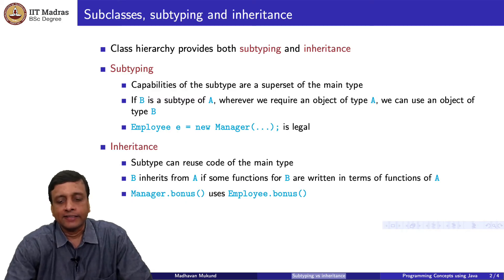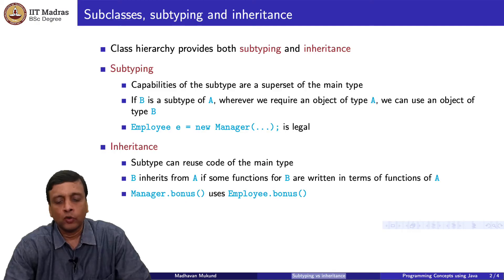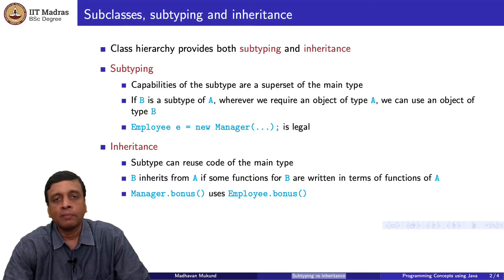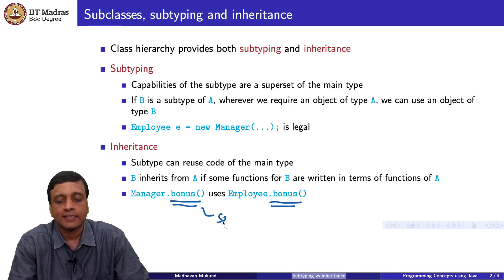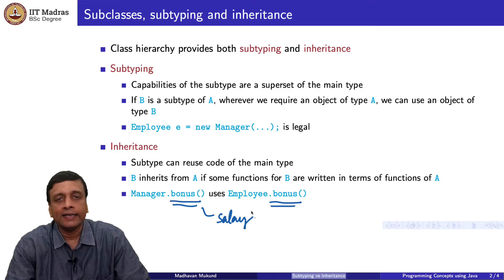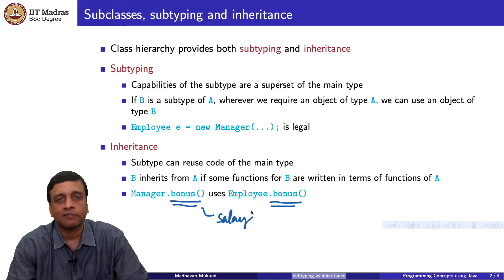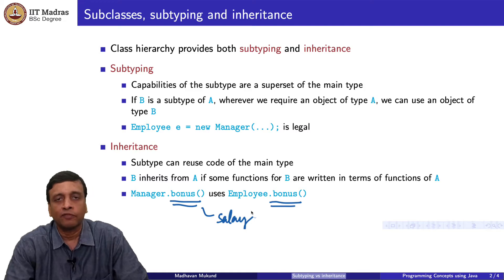The other part is inheritance. Inheritance essentially is talking about the subtype reusing code. B inherits from A if some functions of B are based on some implementation already written in A. Remember that we had defined the bonus function in the manager type, and this overrides the employee bonus. But one complication was that manager could not access the salary variable because salary was a private variable in employee. So we did not directly define bonus in manager — we said call the super bonus, that is the employee's bonus, and then multiply that by some factor to get the manager's bonus. So the manager's bonus is a derived quantity which implicitly reuses the implementation of the employee bonus.